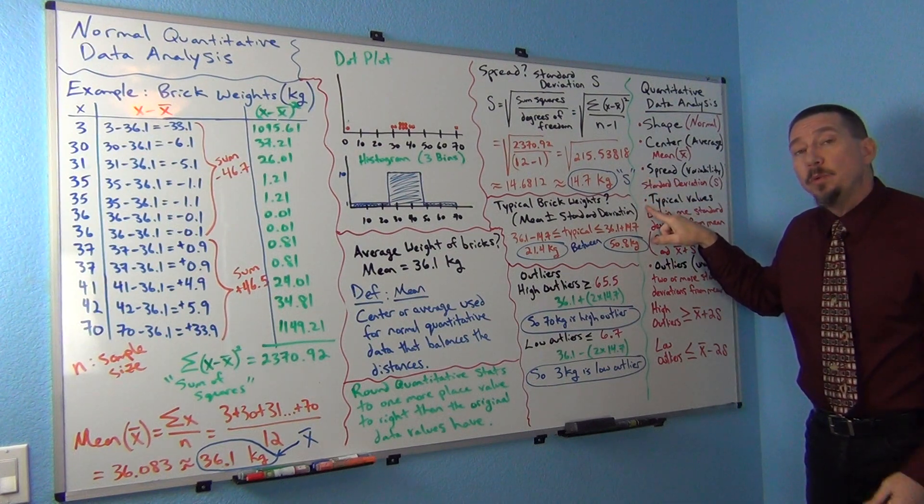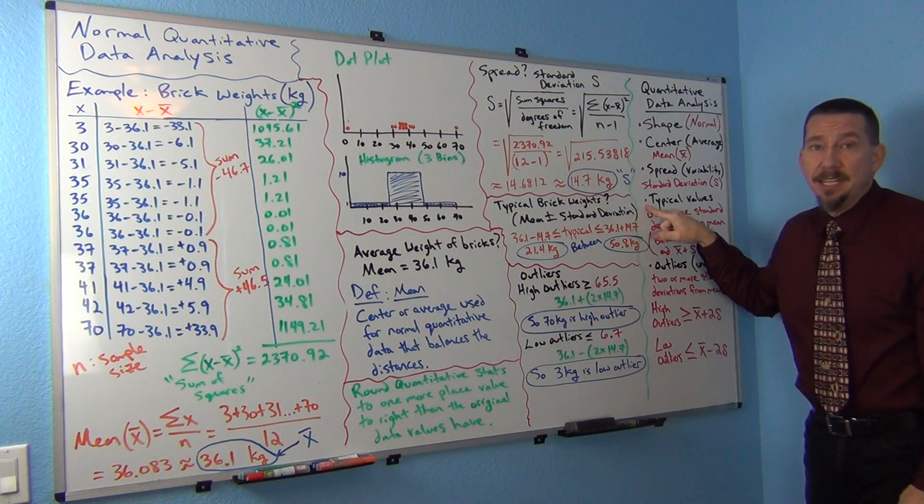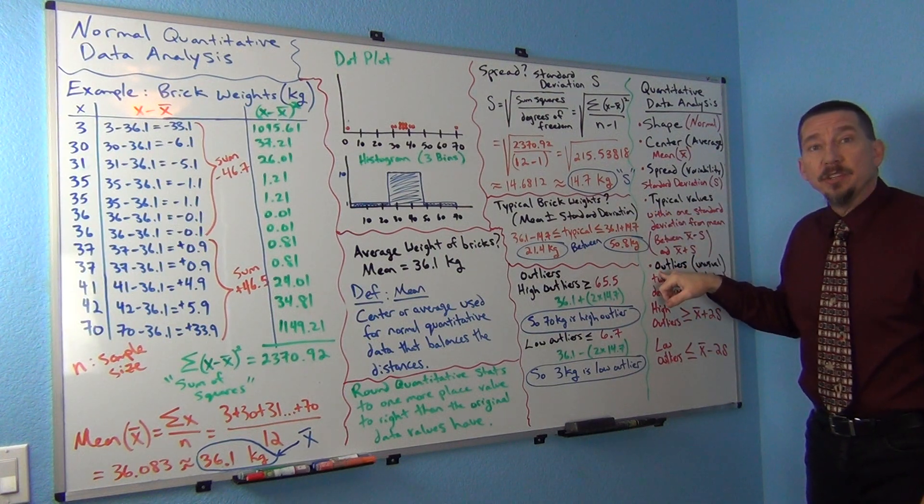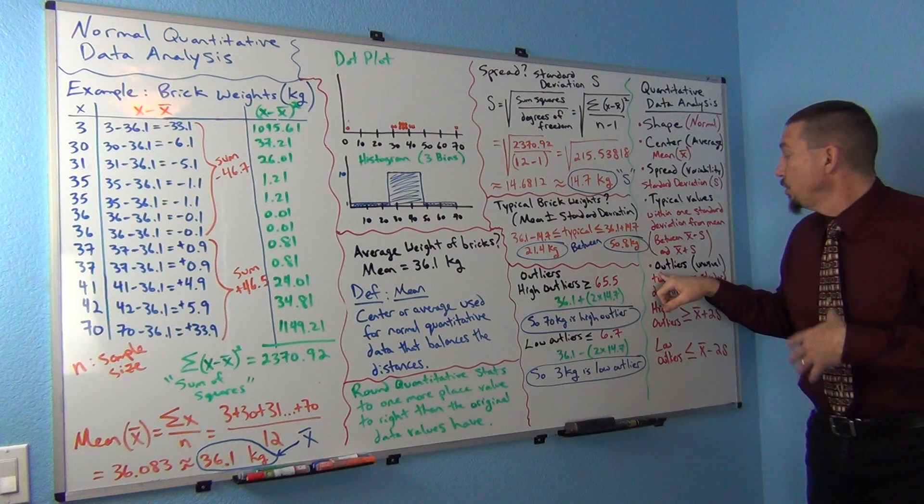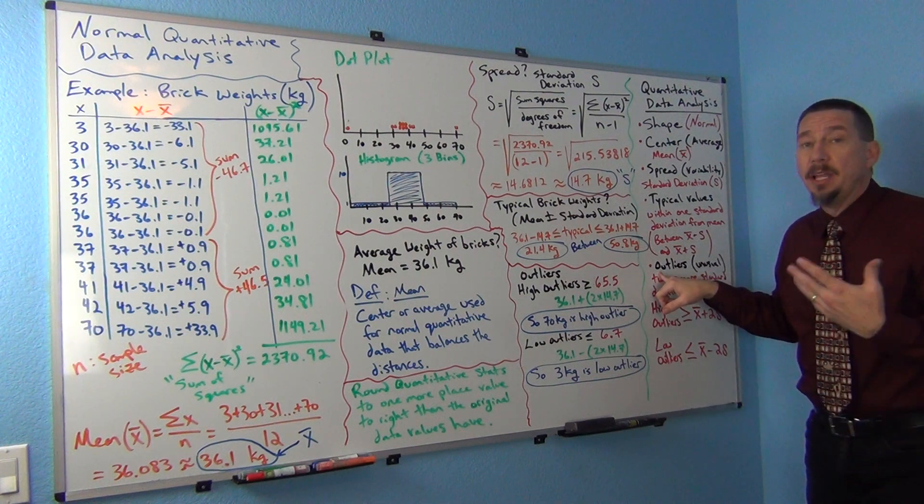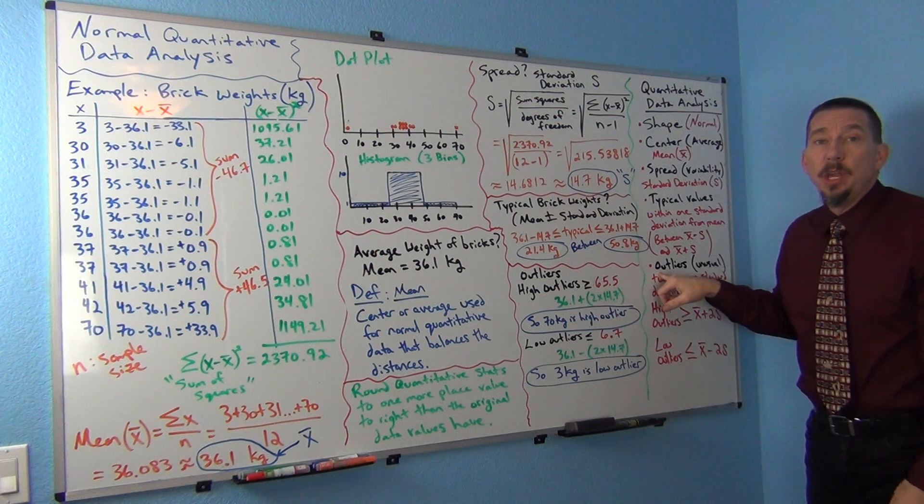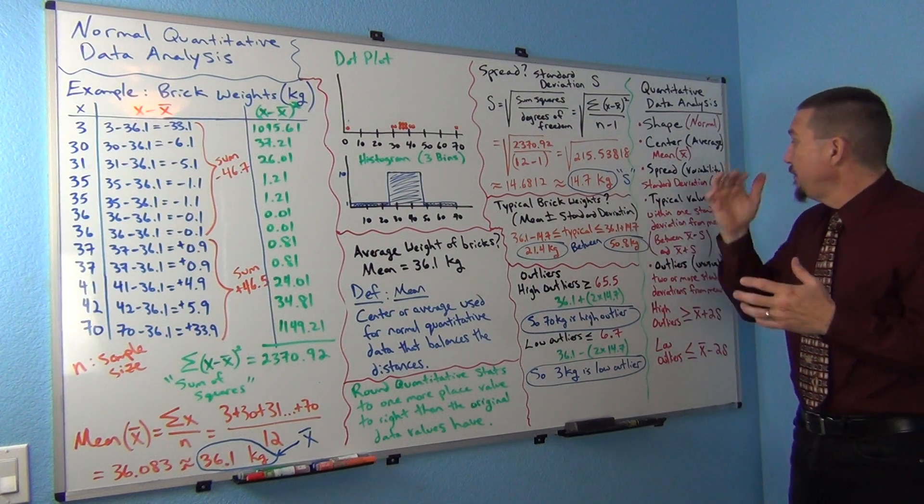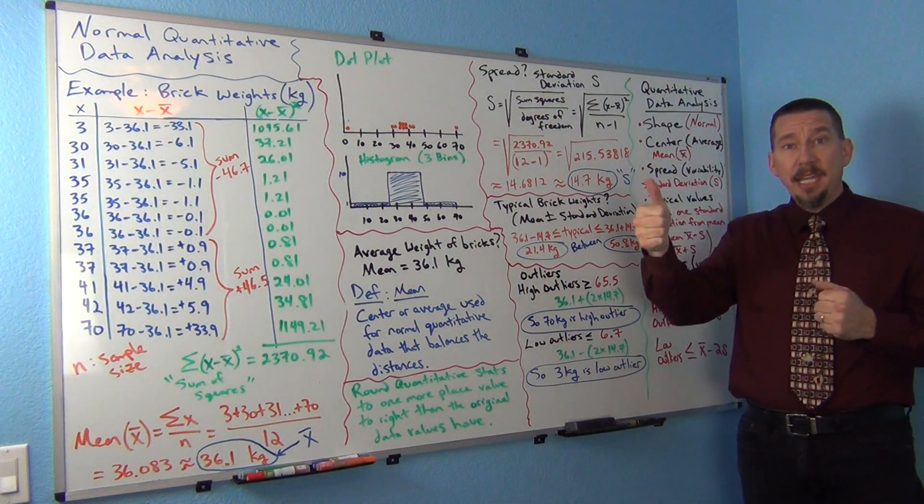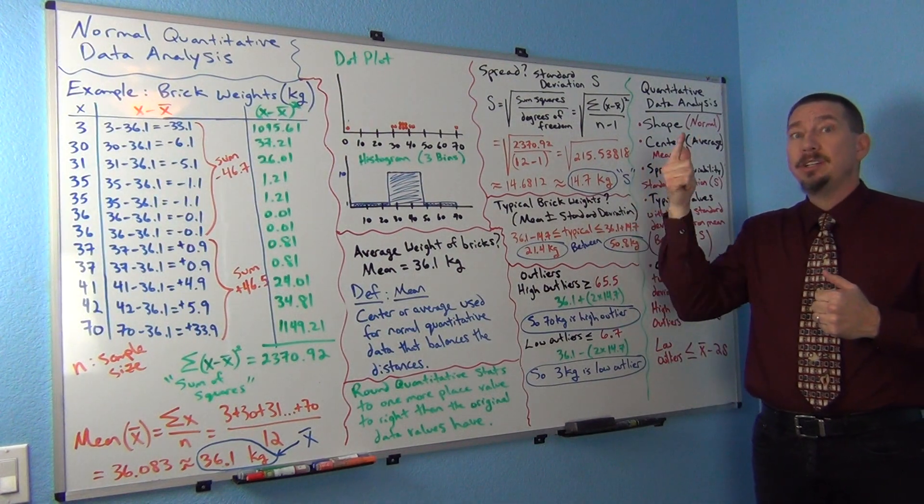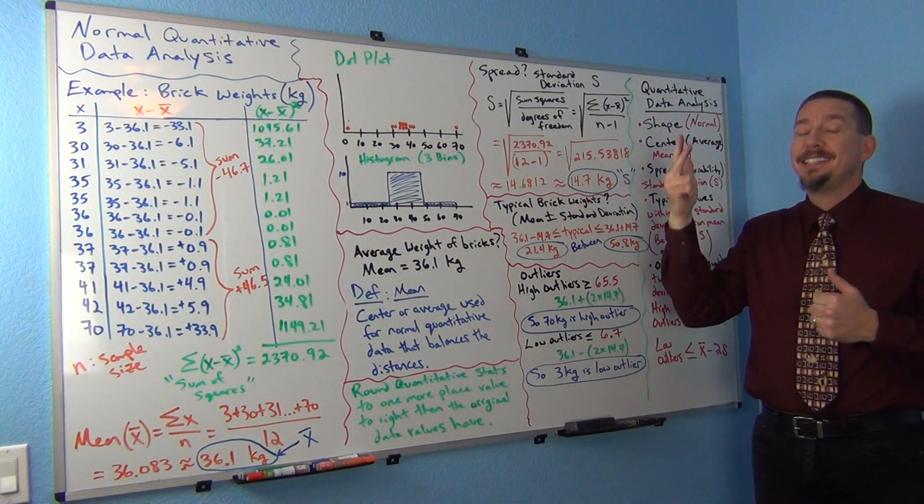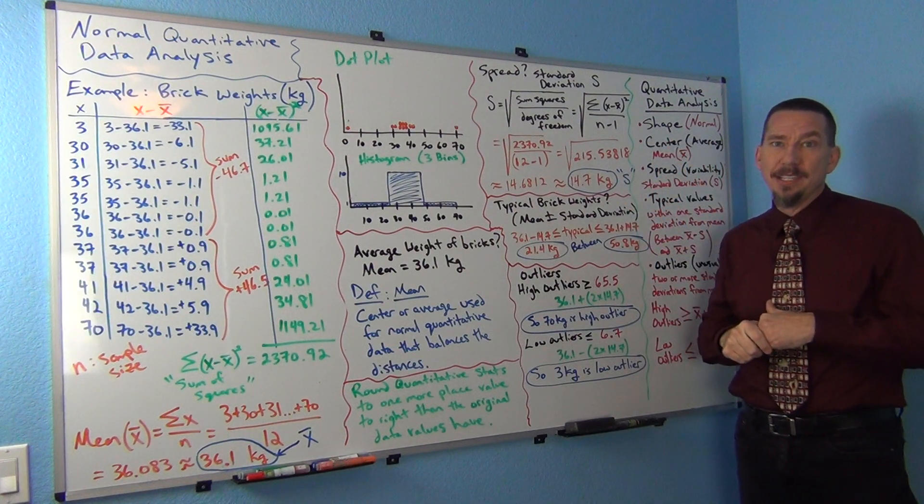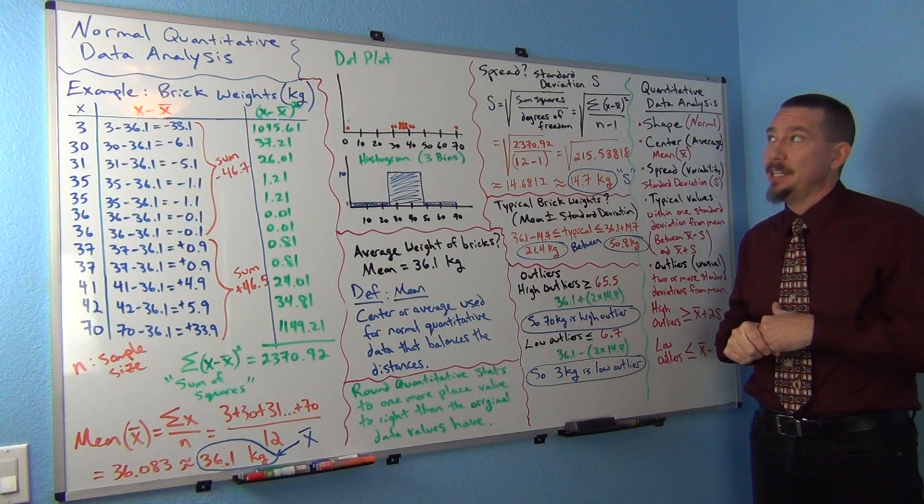We like to find what the typical values in the data set would be, and we'd like to know if there's any unusual values or what we call outliers. So whenever you're analyzing a quantitative data set, have those five things in mind: shape, center, spread, typical, and outliers. Those five things we always want to address when we're analyzing quantitative data.